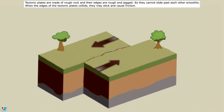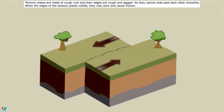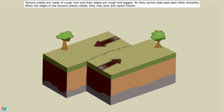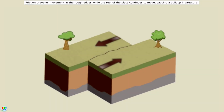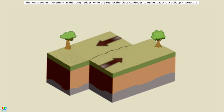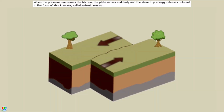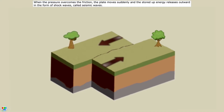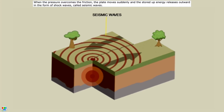Tectonic plates are made of rough rock, and their edges are rough and jagged, so they cannot slide past each other smoothly. When the edges of the tectonic plates collide, they may stick and cause friction. Friction prevents movement at the rough edges, while the rest of the plate continues to move, causing a buildup in pressure. When the pressure overcomes the friction, the plate moves suddenly and the stored-up energy releases outward in the form of shockwaves called seismic waves.